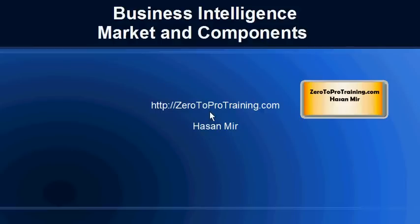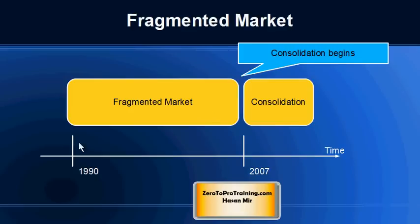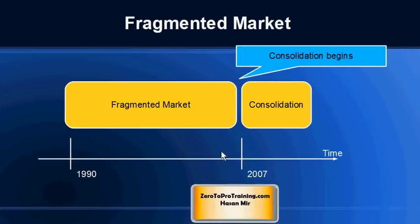Hello, in this session we will discuss the business intelligence market and the components that are part of a typical business intelligence software. This is Hassan Mir from Zero2ProTraining.com. In the previous videos we talked about the history of business intelligence — the term was first used in 1958, and the technology actually came into being in the 1990s in the sense in which it is used today.